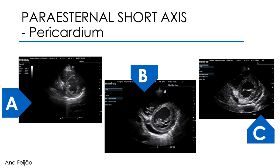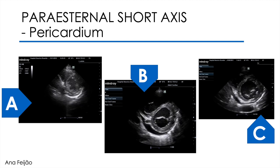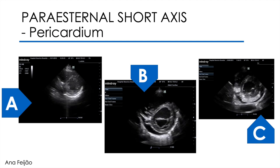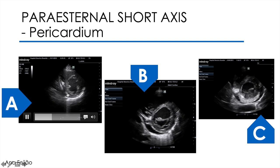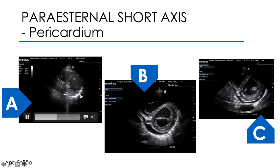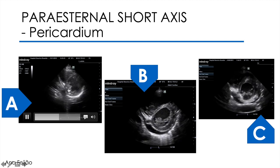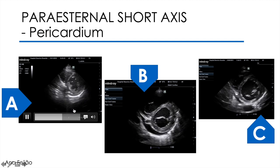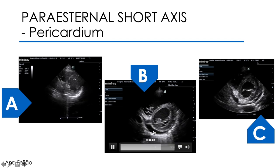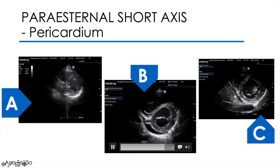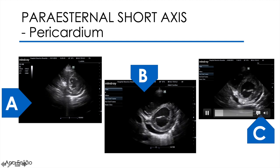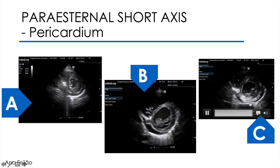Finally, it is an incidence that, by sweeping the entire heart, allows us to have an idea of pericardial alterations in all their extension. In the first example, we can see a mild lateral posterior effusion — this more echogenic zone is the pericardium, here the myocardium, and between them this anechoic zone represents the pericardial effusion. In the central example, we have a slightly larger effusion. And here in C, we can see these echogenic filaments inside the effusion which correspond to fibrin, suggesting an old and organized effusion.